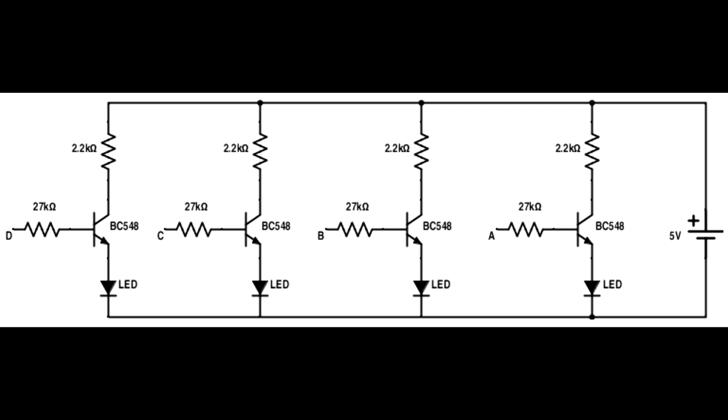Here's how the water level indicator circuit works. We have four points A, B, C and D. The corresponding output LEDs glow depending on the voltage given at these four points.